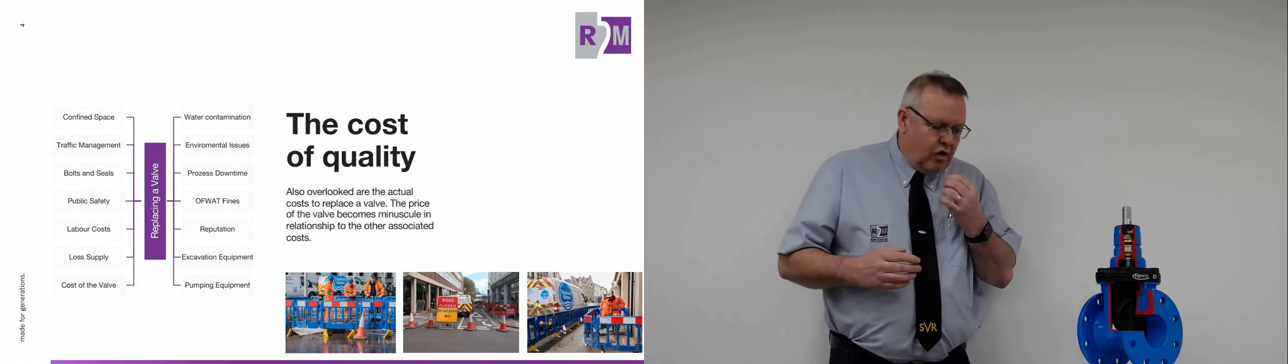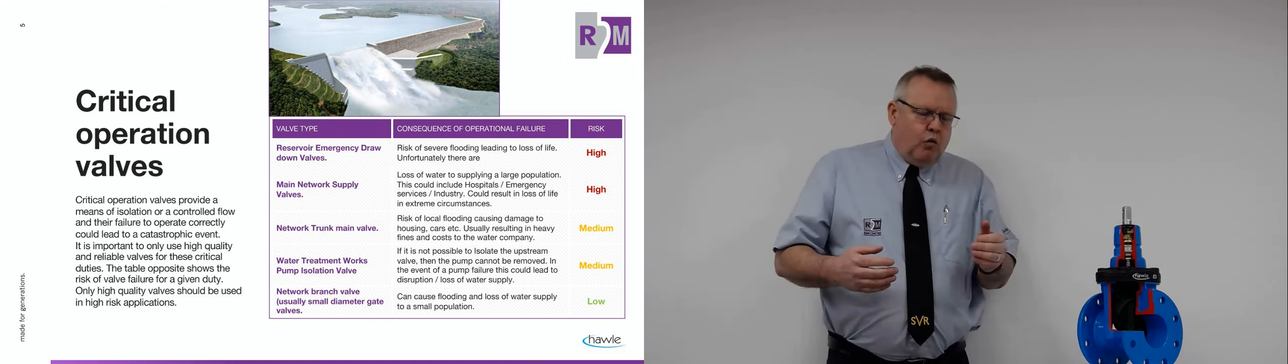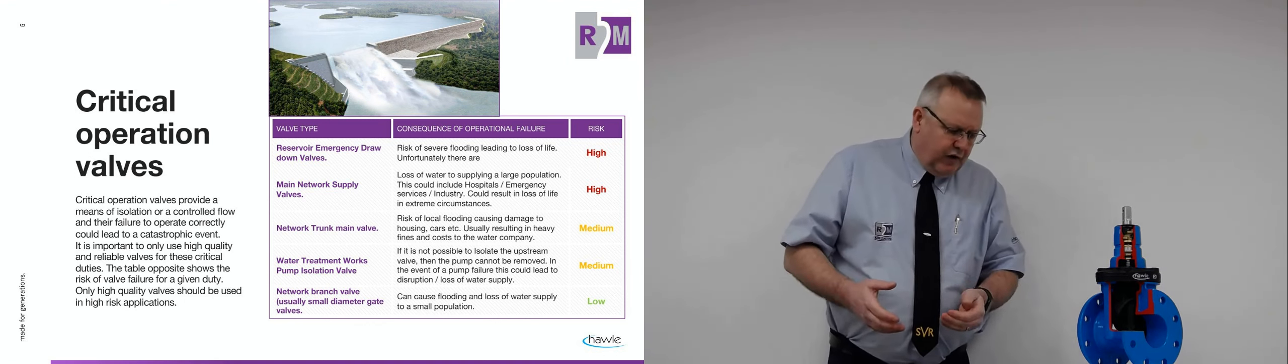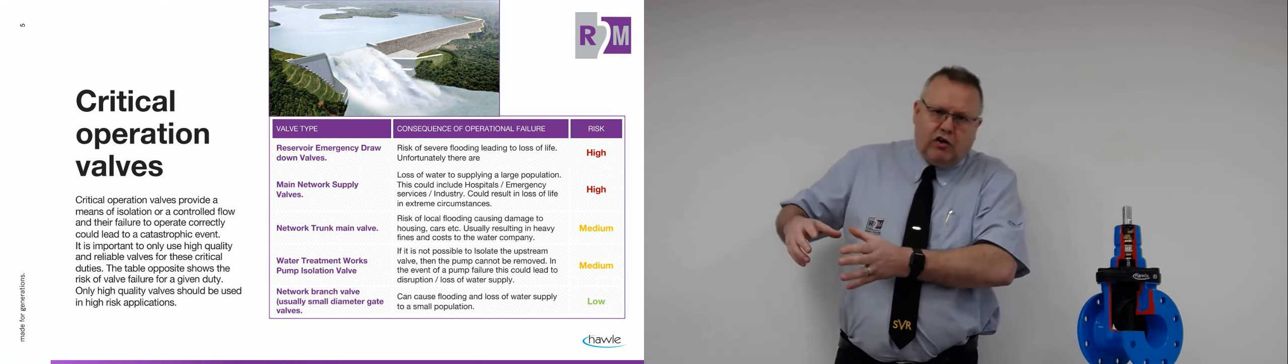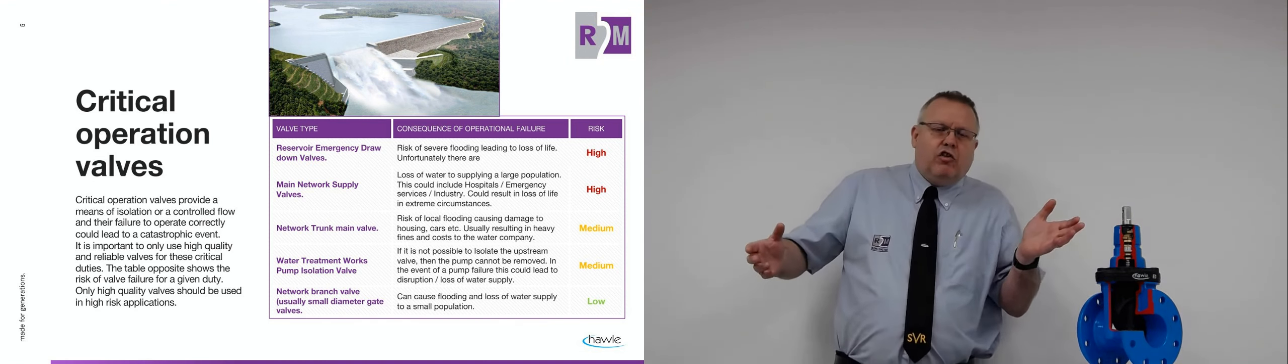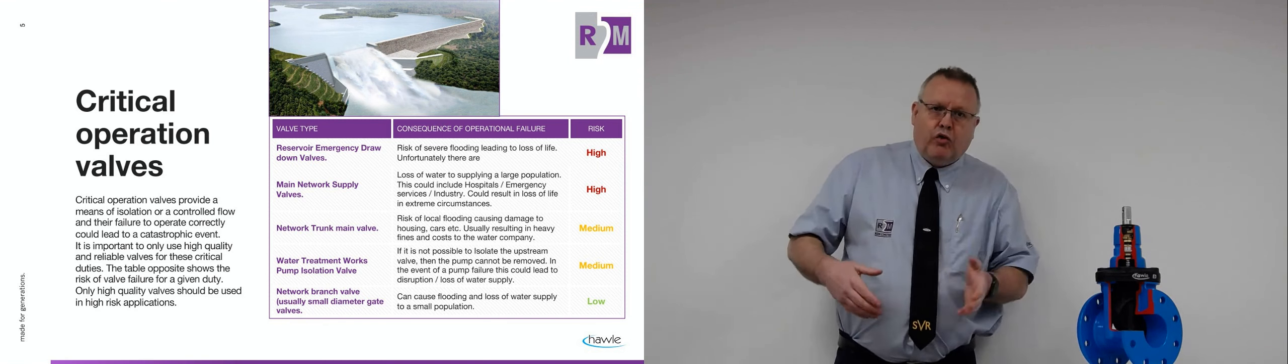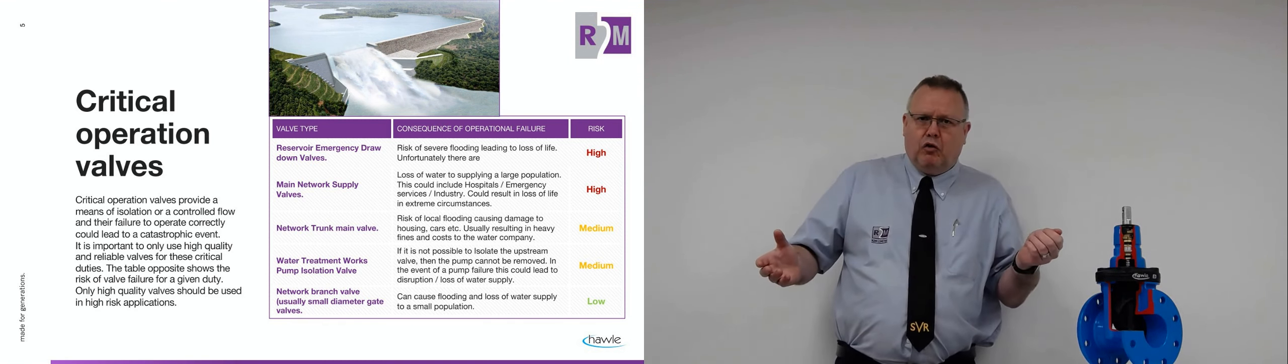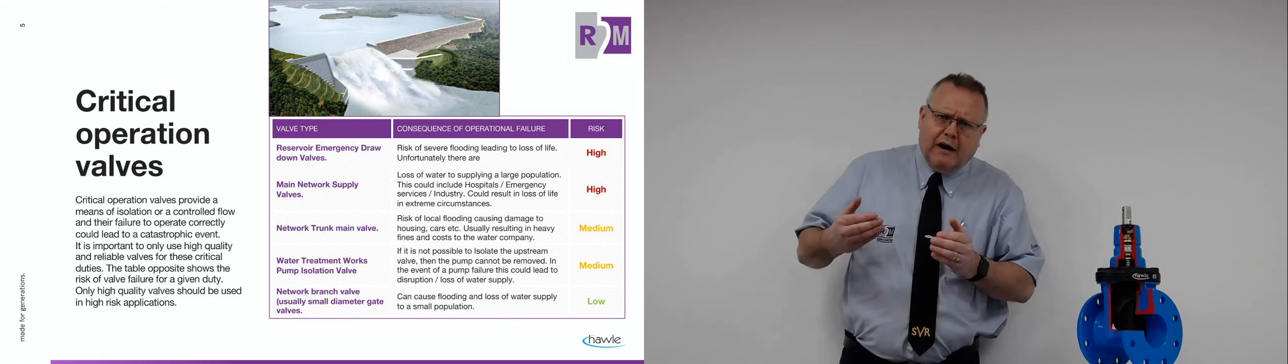We then look at a critical operation valve. So you'd want to put a quality valve in a situation that will provide means of isolation or control to, let's just say, into a hospital, for instance, where if they've got no water, obviously, we can think about what that will do to a hospital. So that valve, it's a critical operation valve, and it's going to be able to operate every time you come to it.